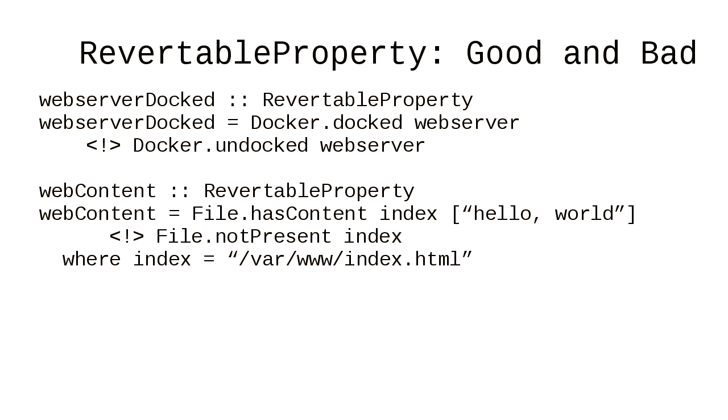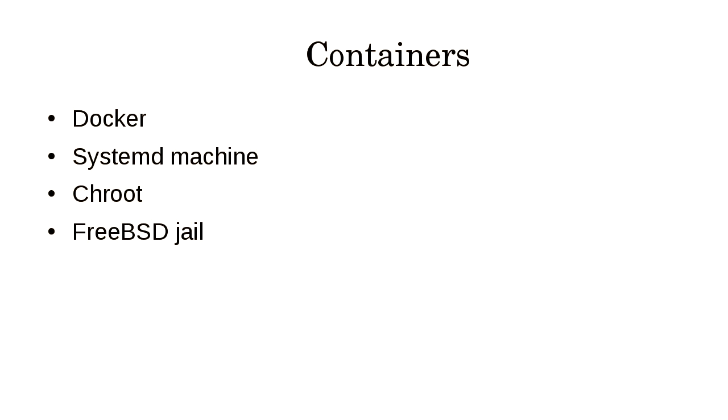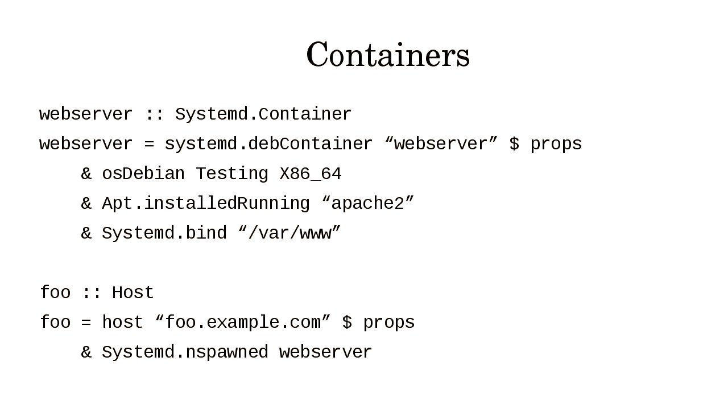The key point is that properties just model the system. You're not pinning down every detail about the system with types — you can't. But even pinning down a small amount lets the type checker help you out. Propeller supports four different containers — Docker, systemd, FreeBSD jails, and chroots — and it supports them all in a very similar way.